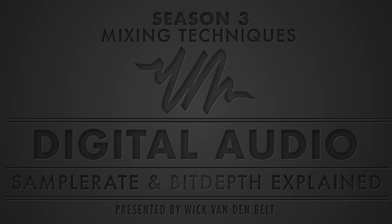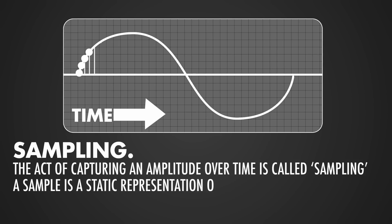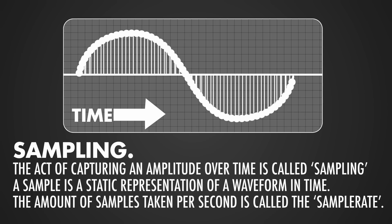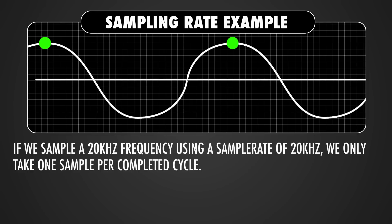Hey, what's up — it's Wik for Wikimedia, and today I'm going to talk about digital audio: sample rate and bit depth. The act of capturing an amplitude value is called sampling. A sample is a static representation of a waveform in time. The amount of samples taken per second is called the sample rate.